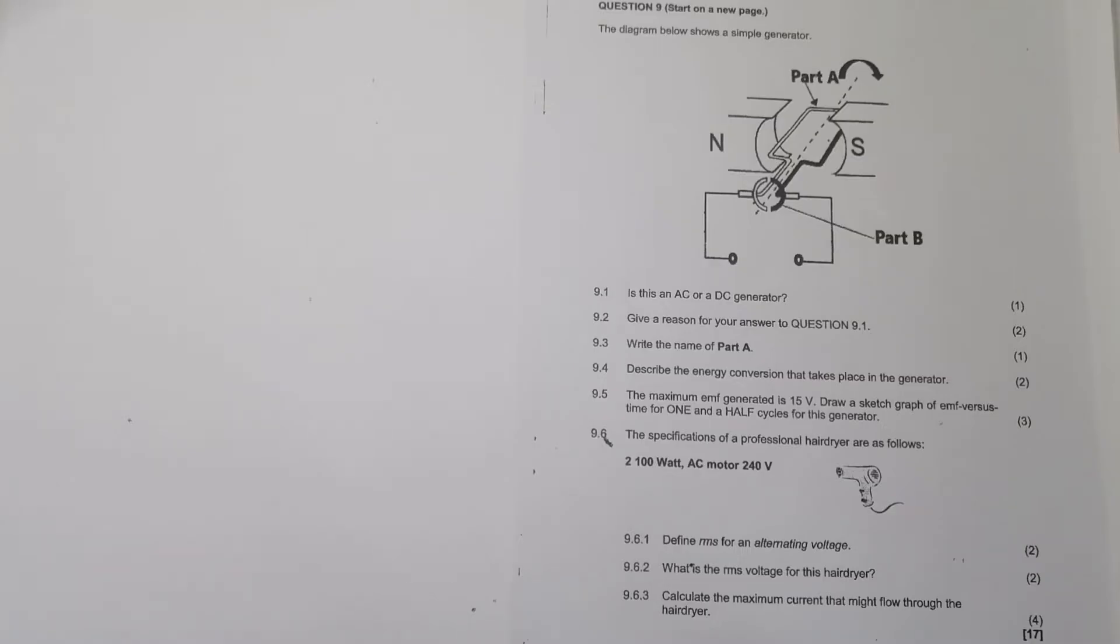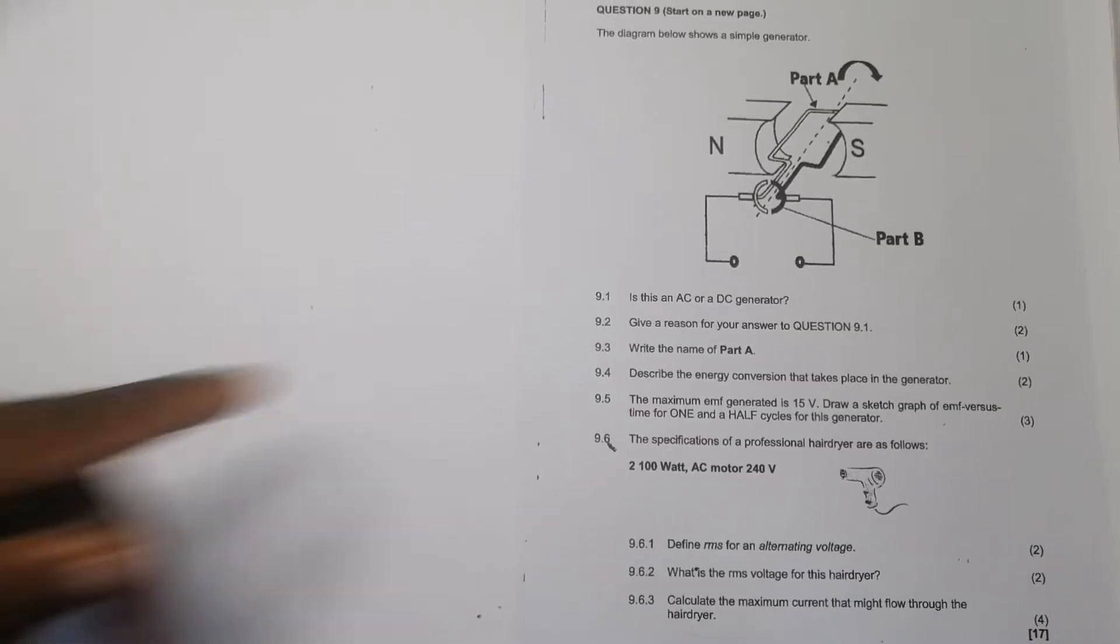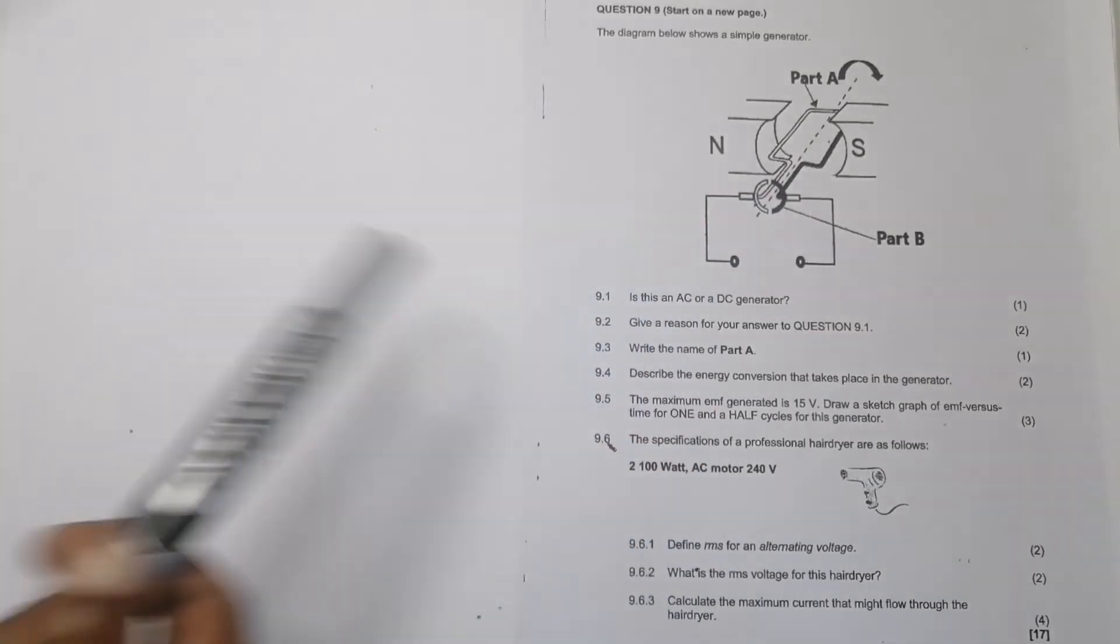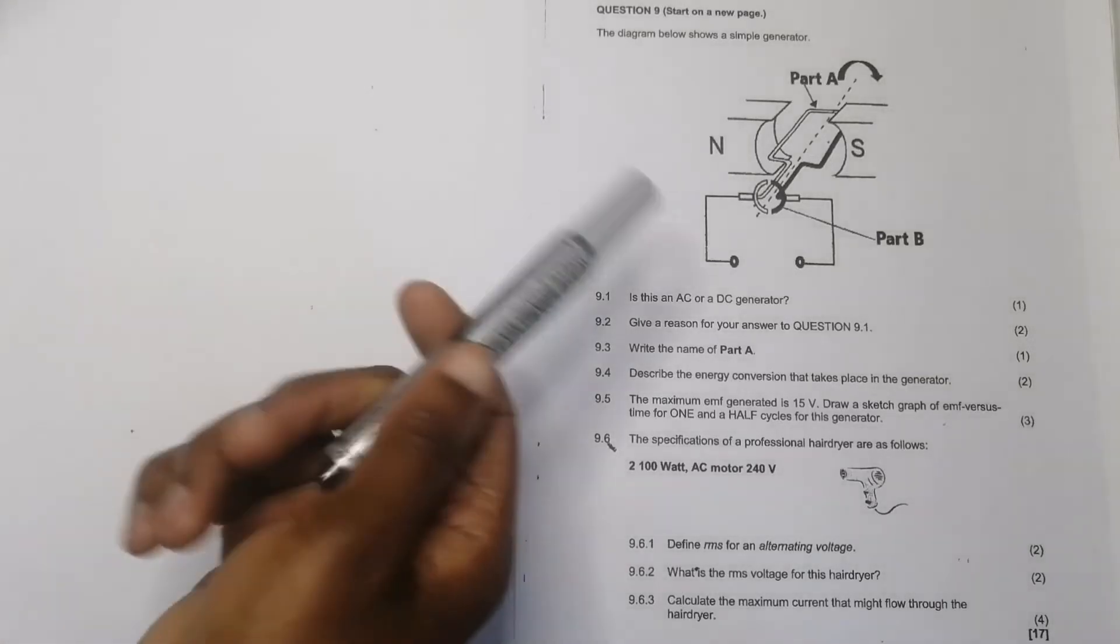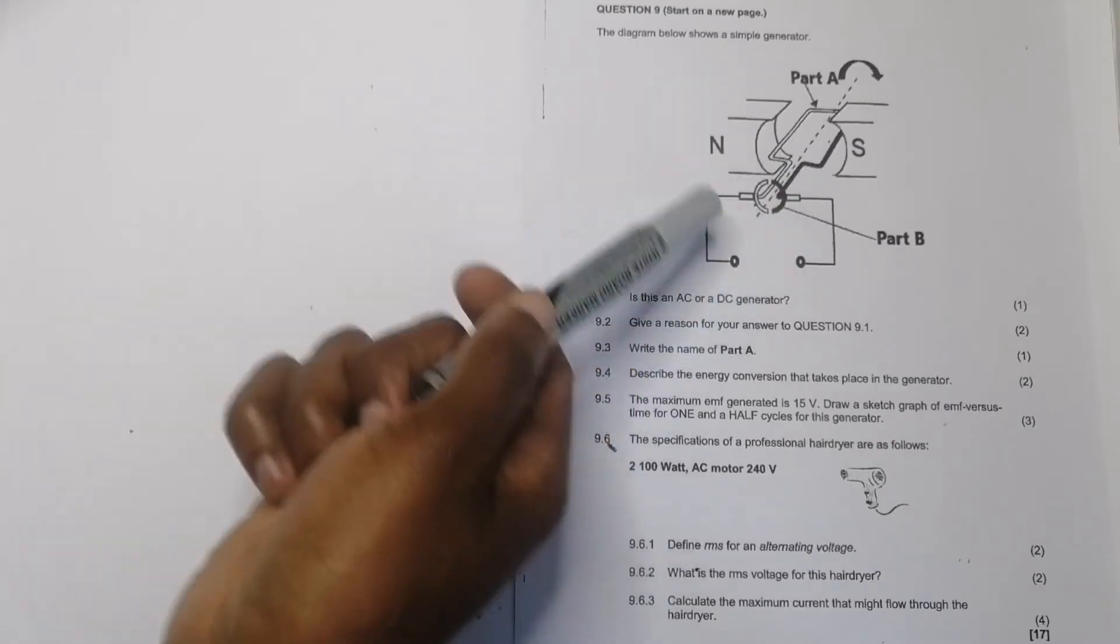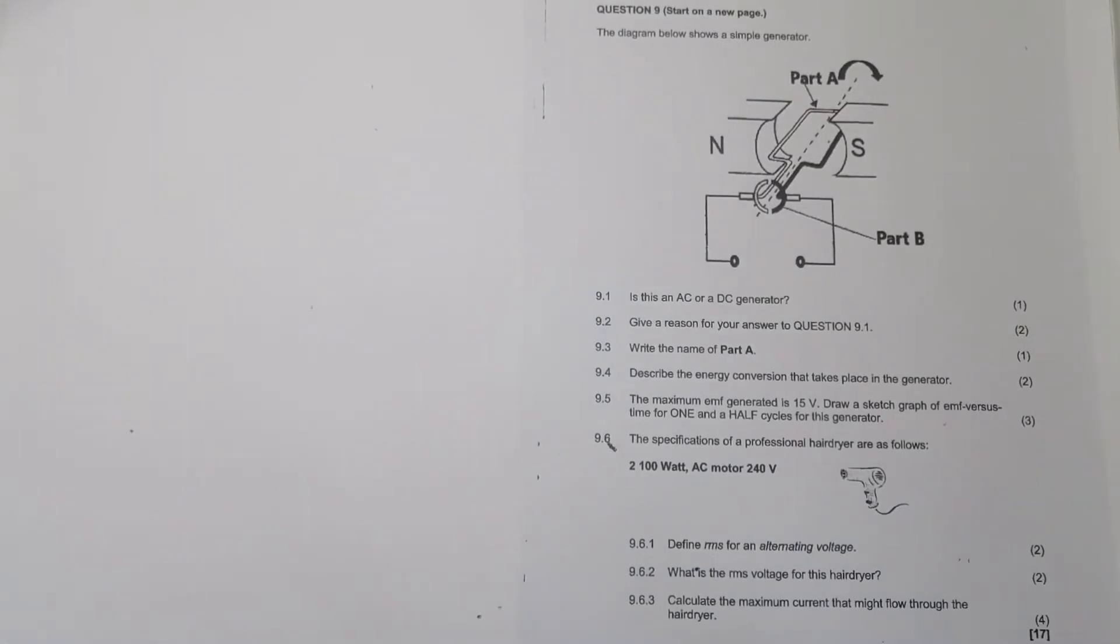Now let's quickly just jump into that question, so this has to do with electrodynamics. Looking at it, they're giving us that structure there, we can see there's our magnets and there's our armature. They're asking, is this an AC or a DC generator? Looking at it, can you see part B there, those are split rings or what we call our commutators, so in this case, this tells us that this should be a DC generator.